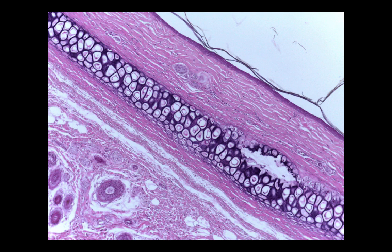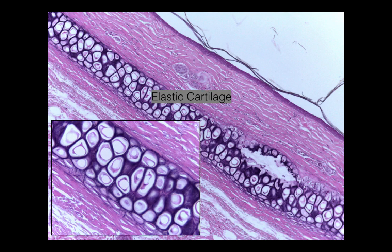This slide shows elastic cartilage. It looks similar to hyaline cartilage except you can actually see those elastic fibers in here. Elastic fibers almost always stain black or dark blue-purple.